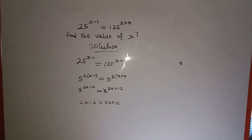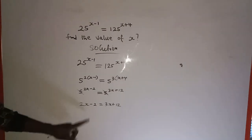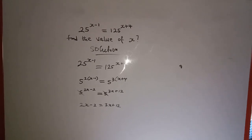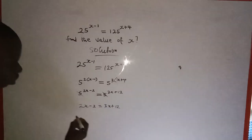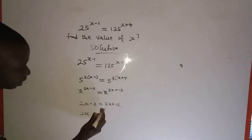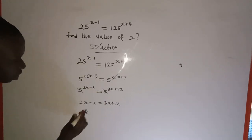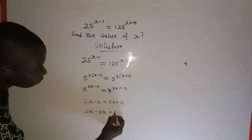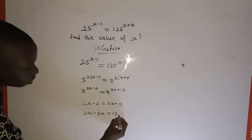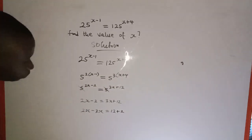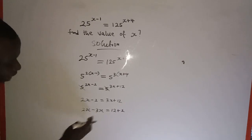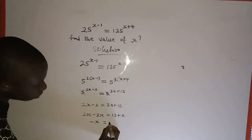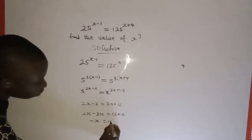To find the value of s, we collect like terms — moving terms with s to the left hand side and constants to the right hand side. So 2s minus 3s equals 12 plus 2, which gives us negative s equals 14.